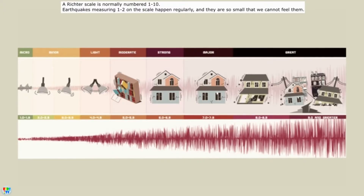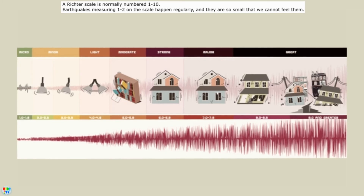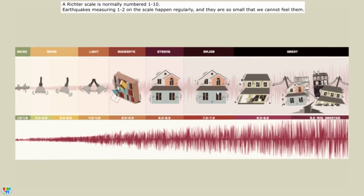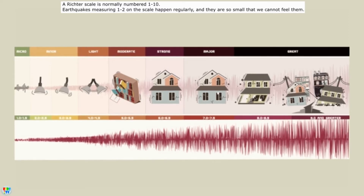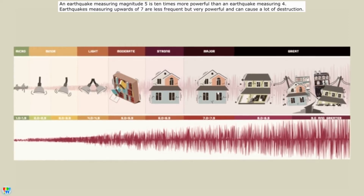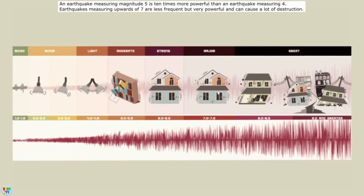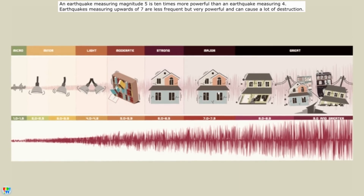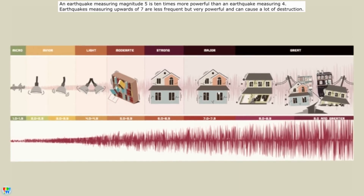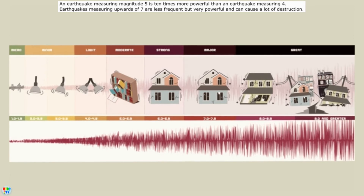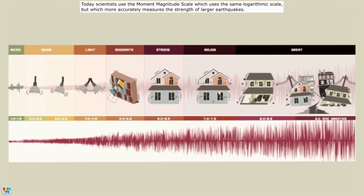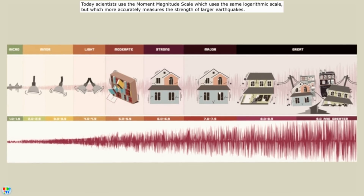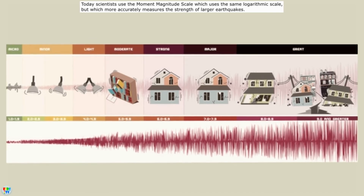A Richter scale is normally numbered 1 to 10. Earthquakes measuring 1 to 2 on the scale happen regularly, and they are so small that we cannot feel them. An earthquake measuring magnitude 5 is 10 times more powerful than an earthquake measuring 4. Earthquakes measuring upwards of 7 are less frequent, but very powerful and can cause a lot of destruction. Today scientists use the moment magnitude scale, which uses the same logarithmic scale, but which more accurately measures the strength of larger earthquakes.